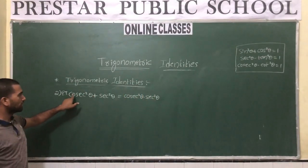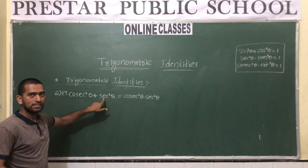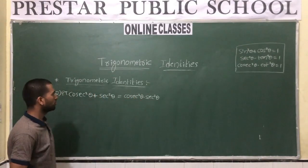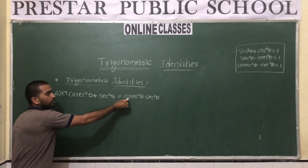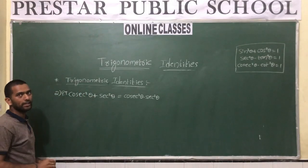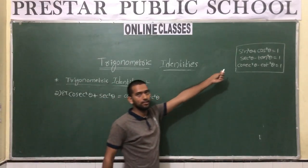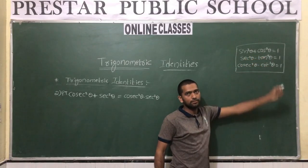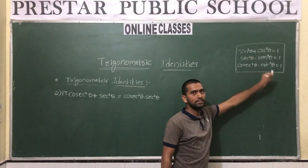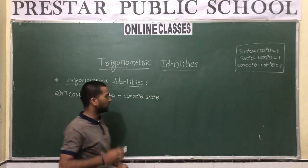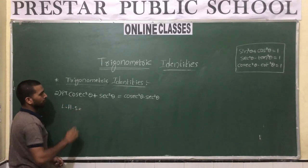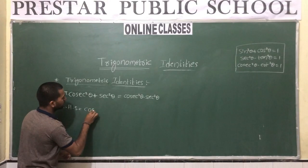Let us discuss one more problem. Prove that cosec²θ + sec²θ = cosec²θ · sec²θ. We need to prove LHS equals RHS using trigonometric identities. Let us take the LHS: cosec²θ + sec²θ.